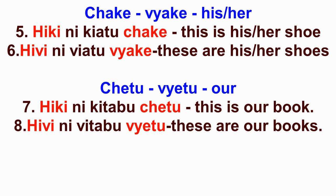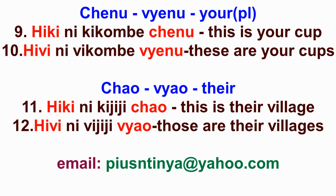Second person plural: chenu and vienu — means 'your' (plural). Sentence nine: hiki nikikombe chenu — this is your cup. Sentence ten, in the plural: hivi nivikombe vienu — these are your cups. It's very easy.